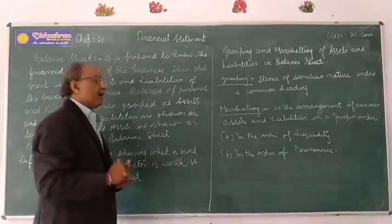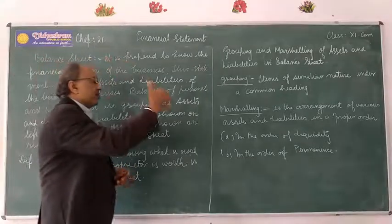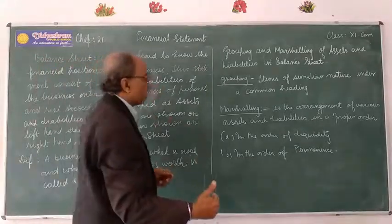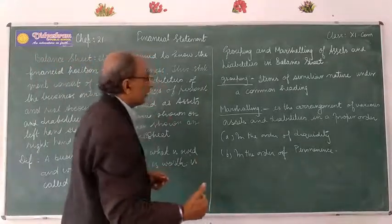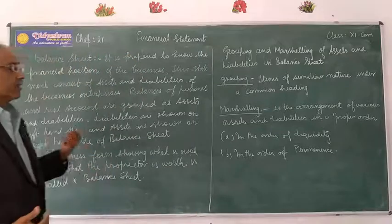If there is liquidity order, first we have current assets, then non-current and long-term assets. Then we have current liabilities followed by long-term liabilities.